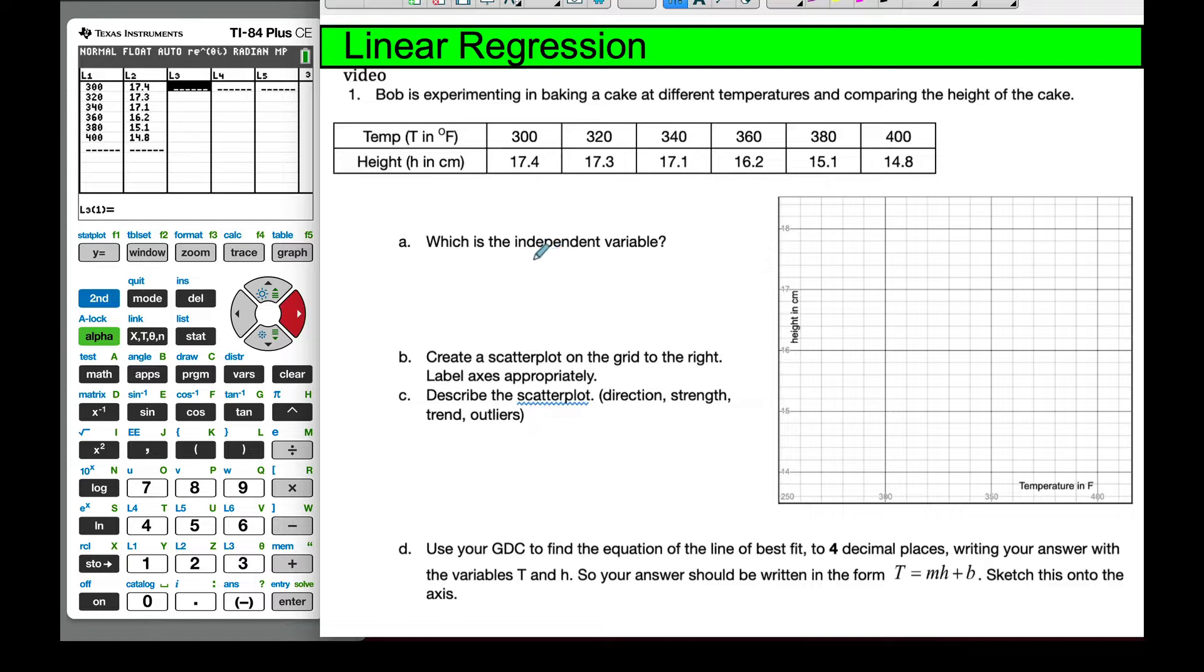Which is the independent variable? So the independent variable is the one that controls. And so temperature is the one that controls the height, so it is the independent variable.